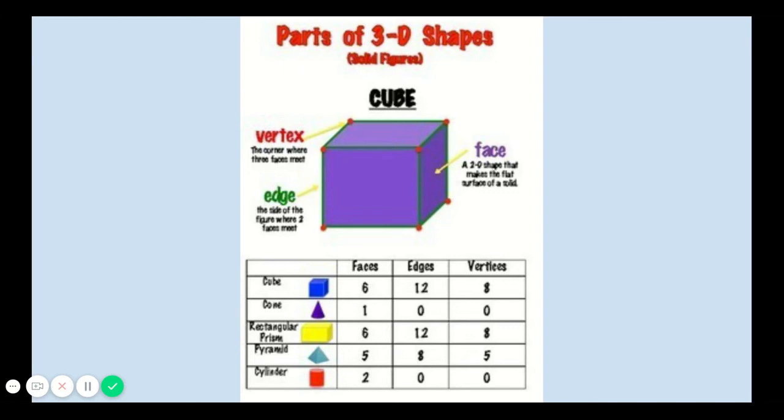And a cylinder has two faces, the circles at the top and the bottom, and zero edges and vertices.